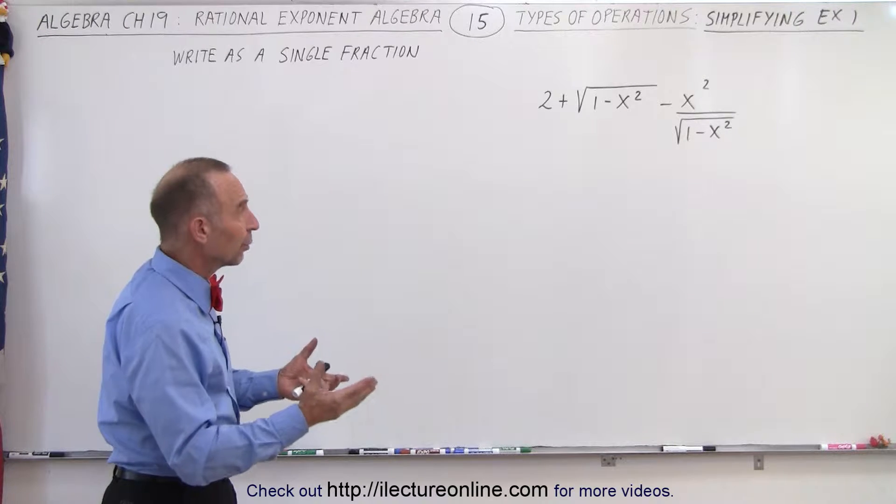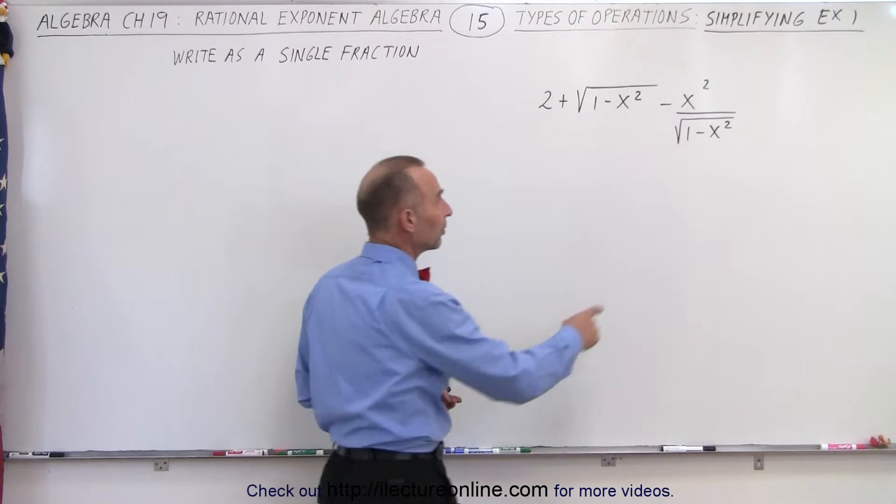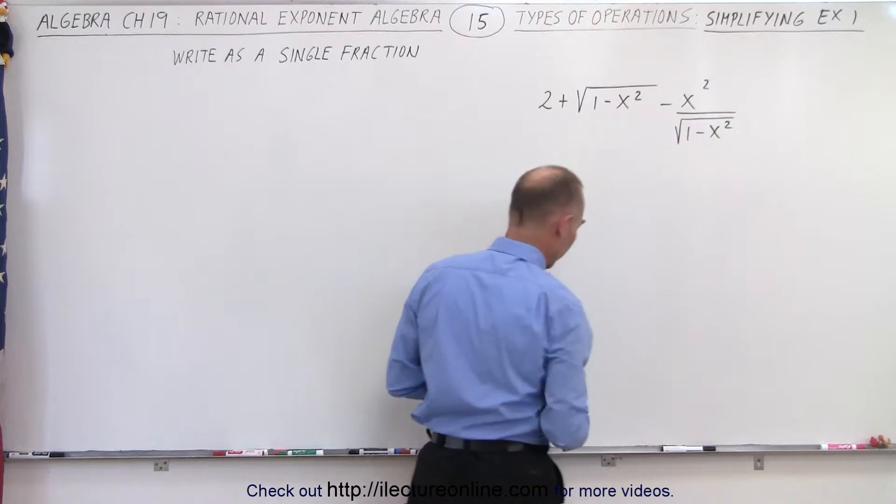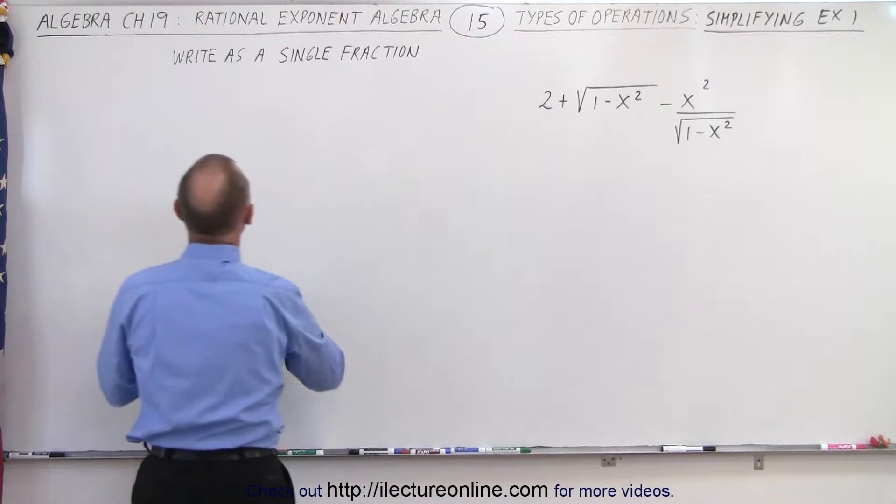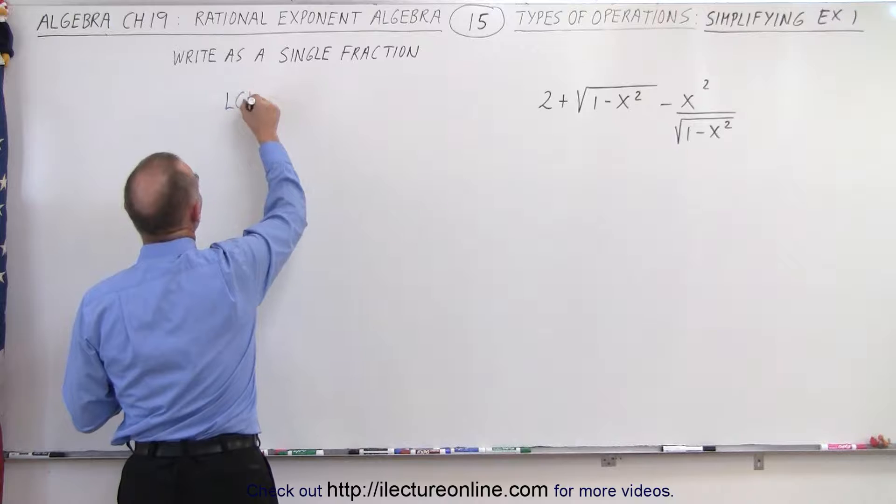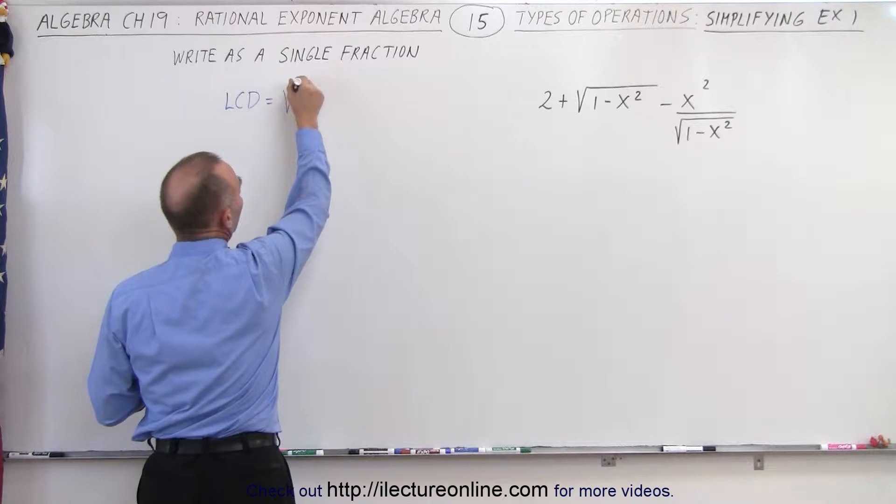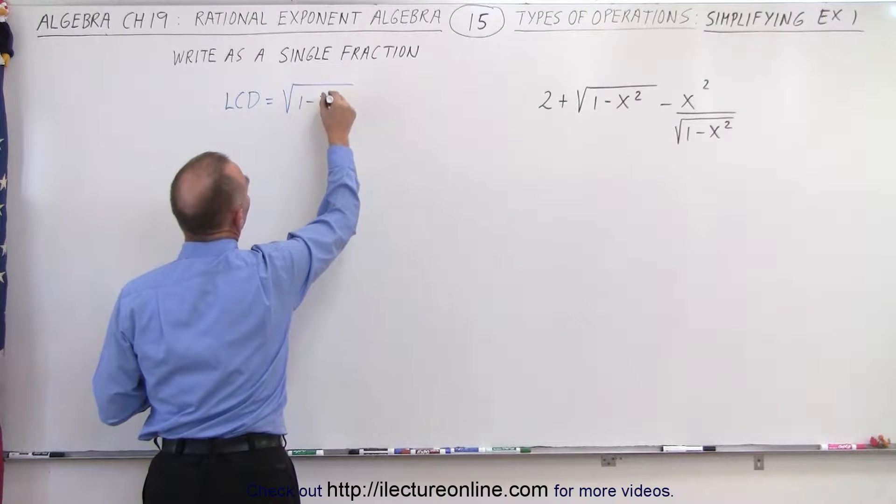To do that, we need to find the lowest common denominator. Since there's only one denominator, that then becomes the lowest common denominator. We can write that as the LCD, in this case, is equal to the square root of 1 minus x squared.